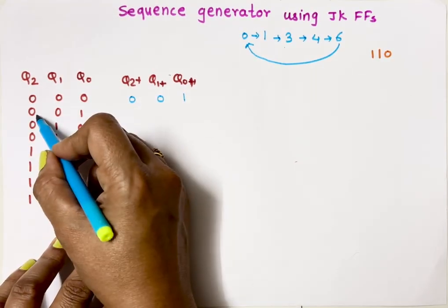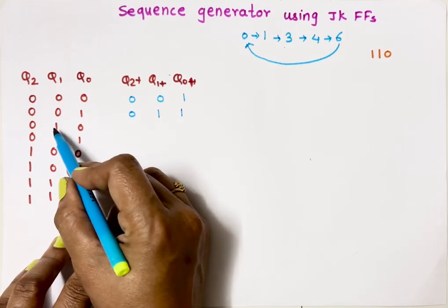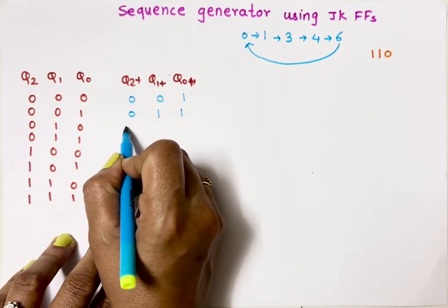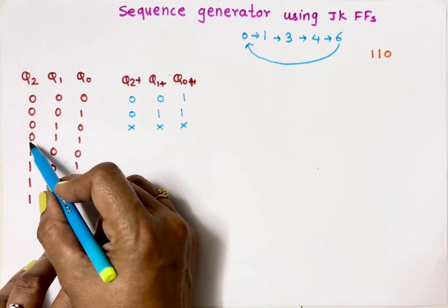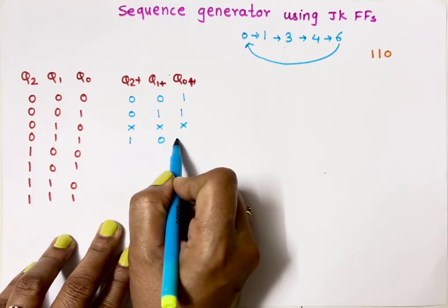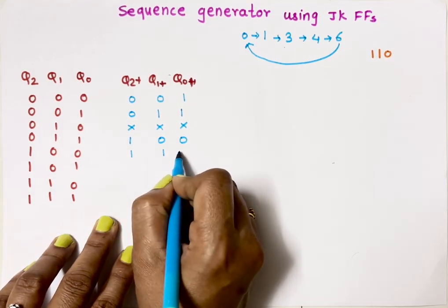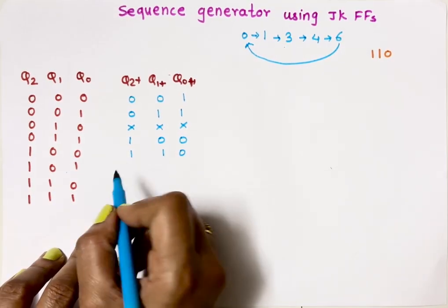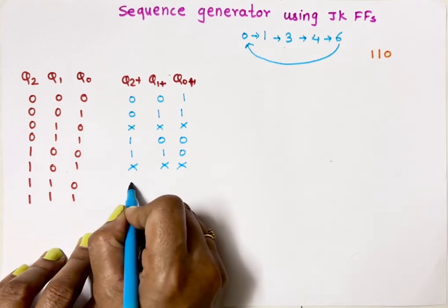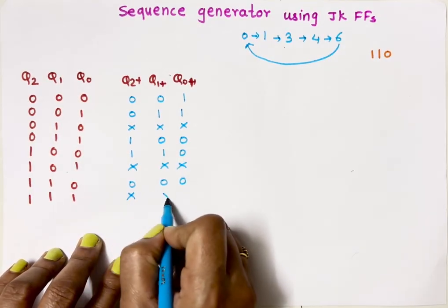If present state is 1 (001), the next state is 3, so I write 011. For present state 2 (010), we don't have 2 in this sequence, so 2 will never appear — next state is don't care. If present state is 3 (011), then after 3 comes 4, so next state is 100. Present state 5 is not in the sequence, so next state is don't care. For present state 6, next state is 0 (000). Present state 7 is also not in the sequence, so next state is don't care.